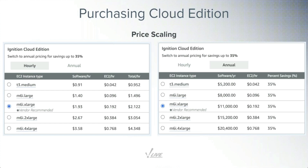The annual pricing is for running 24/7. What we expect a lot of folks to do is start with hourly pricing, find the size that works for them, spin up the system, and if it's handling things appropriately switch over to annual pricing. You're going to save 35% with annual pricing versus paying month-to-month. Of course, if you're just spinning things up and spinning them back down, hourly pricing is always going to be better for you.